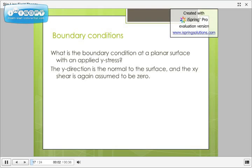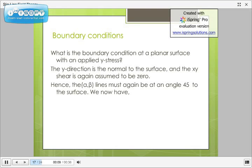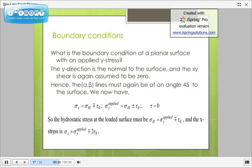Now, let's take another condition where sigma y is not equal to zero. Here, y direction is normal to a surface and the xy shear is again assumed to be zero. Hence, the alpha beta line must again be at 45 degrees to the surface. We now have sigma x equals sigma h plus minus tau naught and sigma y applied equals sigma h plus minus tau naught and tau equals zero. So, the hydrostatic stress at the loaded surface must be sigma h equals sigma y applied plus minus tau naught and x stress is sigma x equals sigma y applied plus minus 2 tau naught.